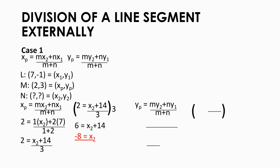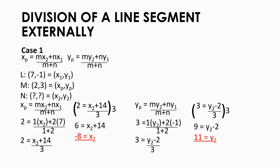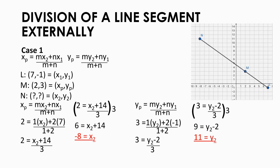Now for the y-coordinate. With the formula y sub p equals m times y sub 2 plus n times y sub 1, all over m plus n: y sub p is 3, m is 1, y sub 2 is still unknown, n is 2, y sub 1 is negative 1, and m plus n is 1 plus 2. Simplify to get 3 equals y sub 2 minus 2, all over 3. Multiply both sides by 3: 9 equals y sub 2 minus 2. Add positive 2 to both sides: y sub 2 equals 11. We identified x sub 2 and y sub 2 for Case 1. Plot (negative 8, 11) and it's now complete.